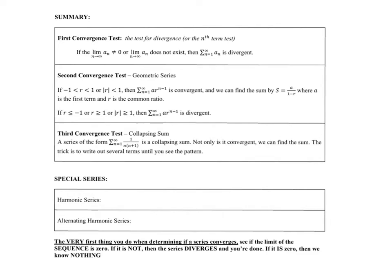There's a little warning: if you end up getting zero for that very first test — if you take the limit as n goes to infinity and you get zero — you do not know whether it converges or diverges. You have to continue with your tests. Remember, we're going to have 10 tests in total, and so this is just the first three.